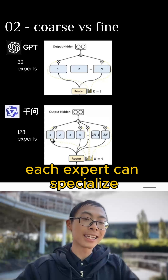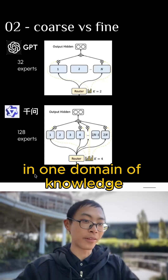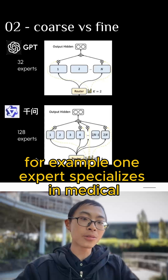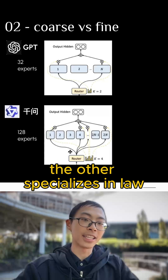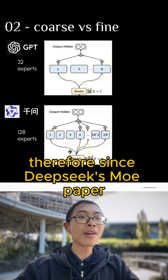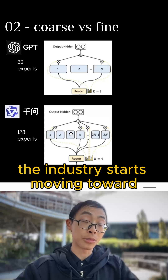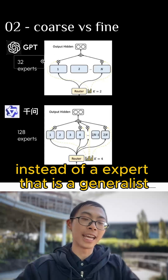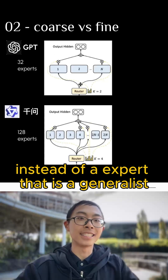Each expert can specialize in one domain of knowledge. For example, one expert specializes in medical, the other specializes in law. Therefore, since DeepSeek's MoE paper, the industry is moving toward more fine-grained experts instead of an expert that is a generalist.